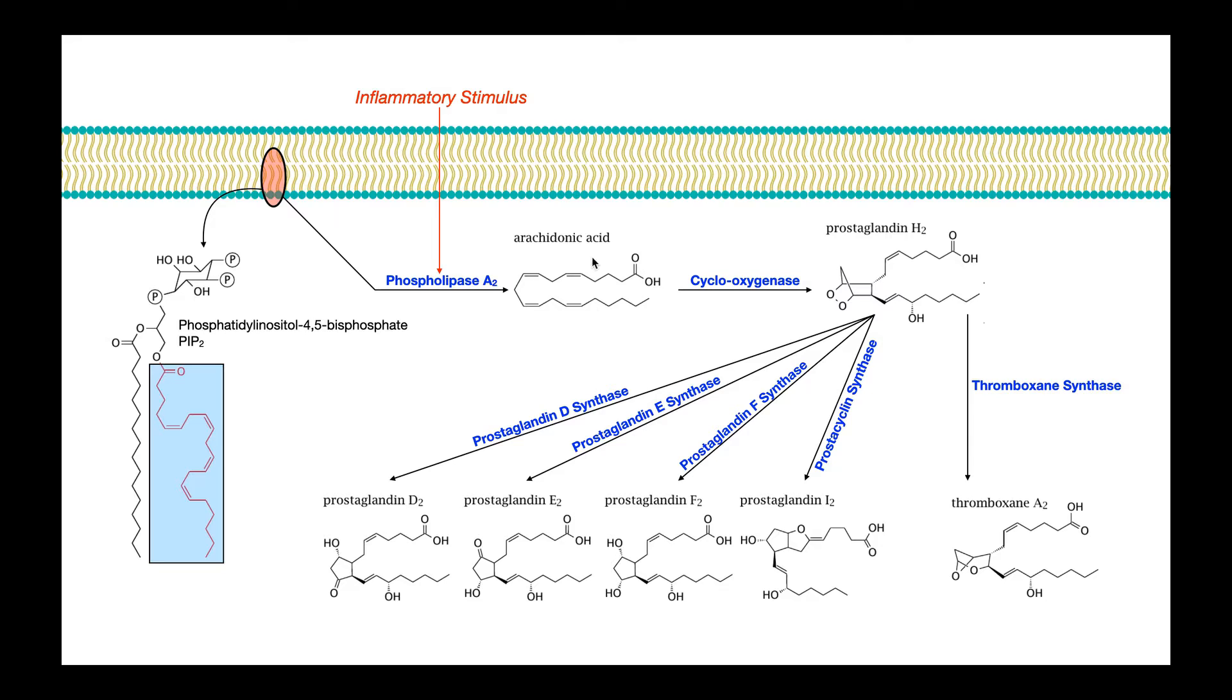It's just still bound to the glycerol backbone right here. And so what the inflammatory stimulus will do is it will activate phospholipase A2, which is an enzyme that's actually bound in the plasma membrane on the cytoplasmic side, and it will hydrolyze off this arachidonic acid fatty acid tail. And so it generates free arachidonic acid.